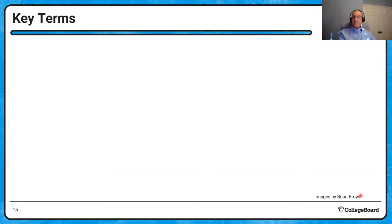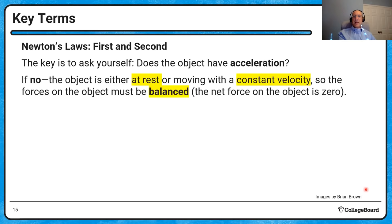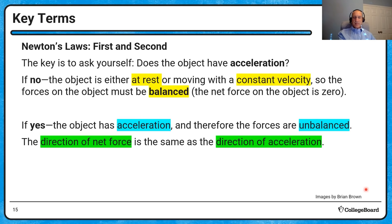The key to understanding Newton's first and second laws is asking: does the object have acceleration? If no, the object is either at rest or moving with constant velocity — both are zero acceleration cases and the forces must be balanced, meaning the net force is zero. If the object is accelerating, the forces are unbalanced and the direction of the net force is always in the direction of acceleration.